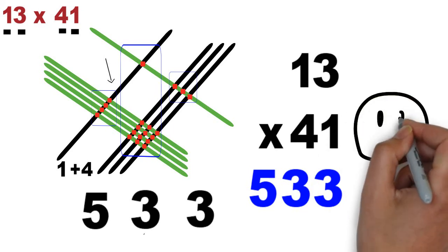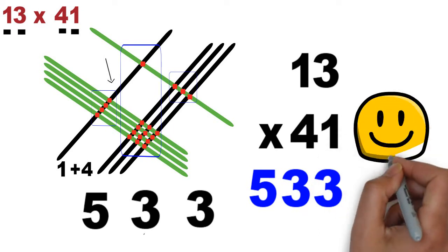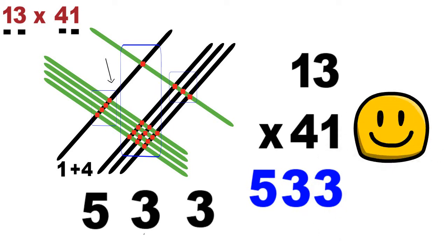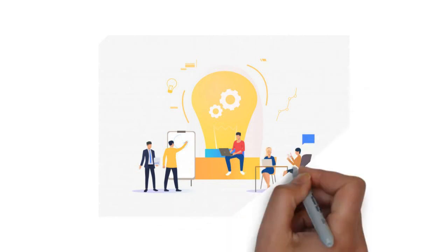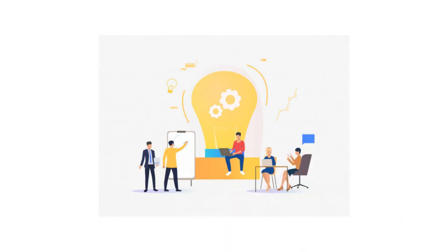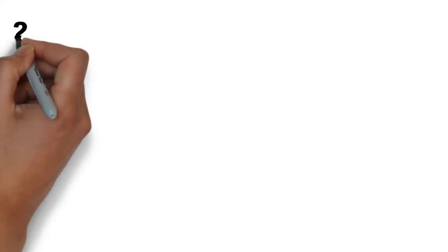That was so simple. Draw lines from left to right. And count the intersections in each zone from the right. Now, you have learned so many examples, you must have mastered this trick. Do you want to try another example? Let's do one more. 22 times 33. Can you quickly do it?